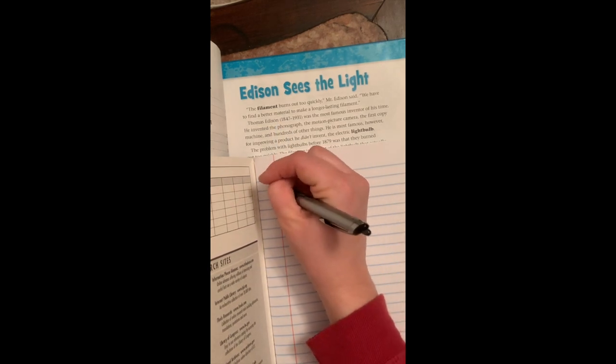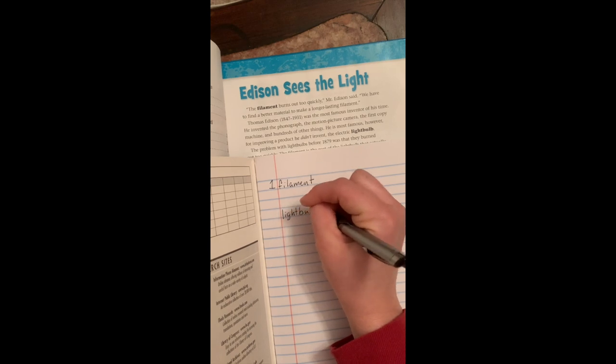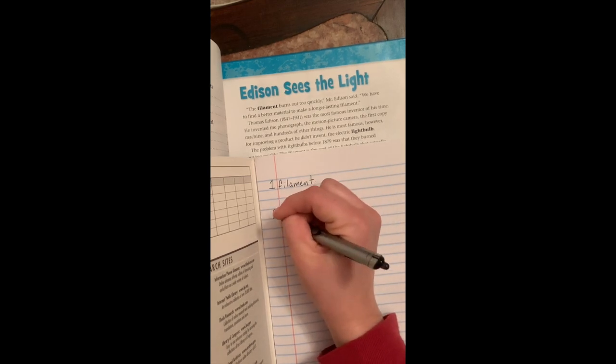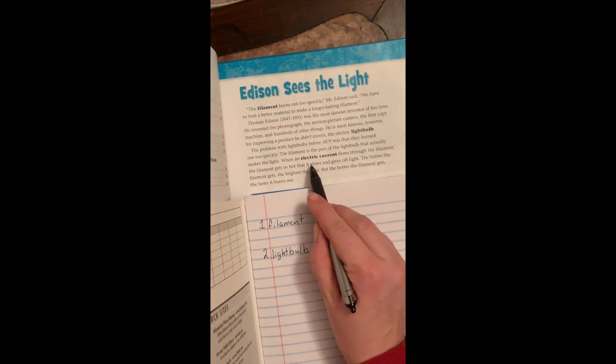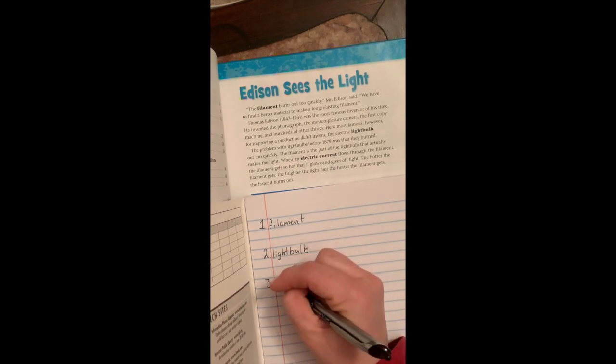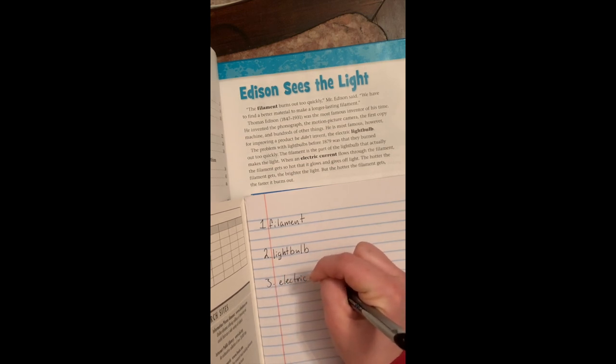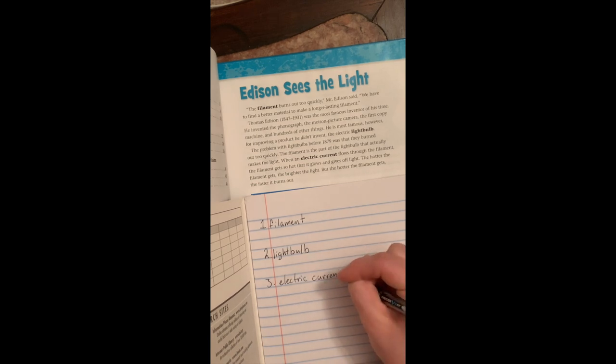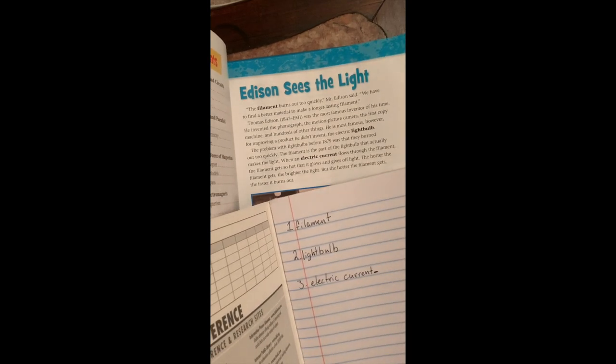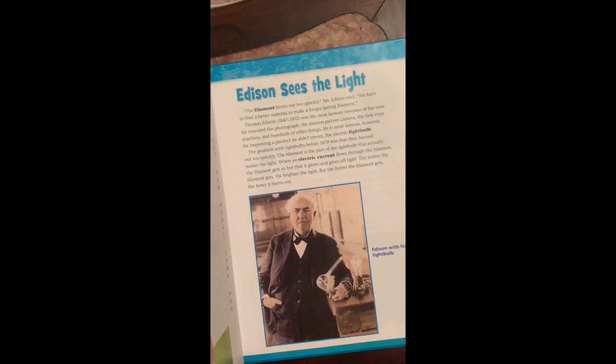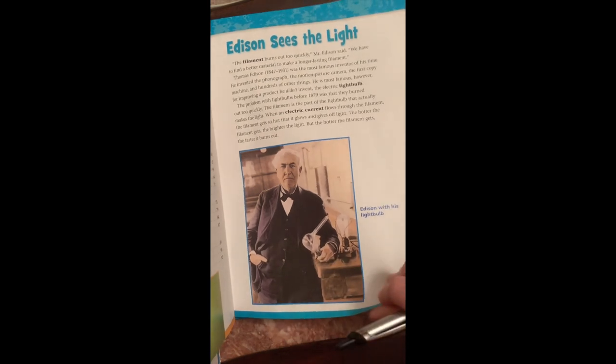So, we've got filament. I don't know what that word means yet, but hopefully we'll find out by looking in the glossary a little later. So, filament, and then I'll leave a little extra space for today. Filament is number one. Then we have light bulb, which I'm pretty sure I already know what that is, but I'm still going to use the glossary's definition of it. And then we've got one more. Electric current.